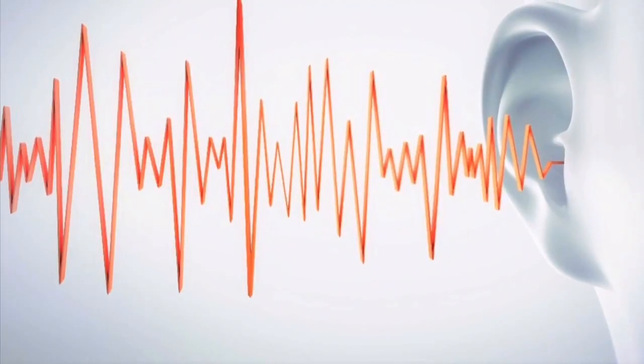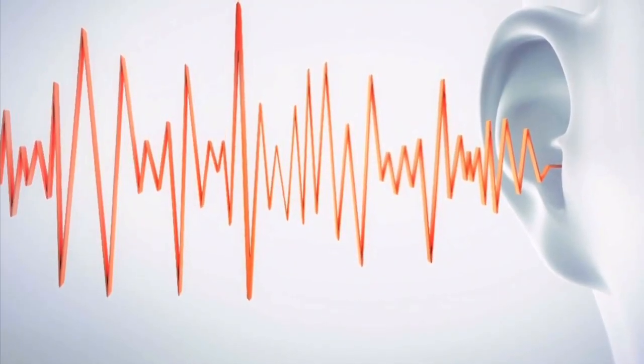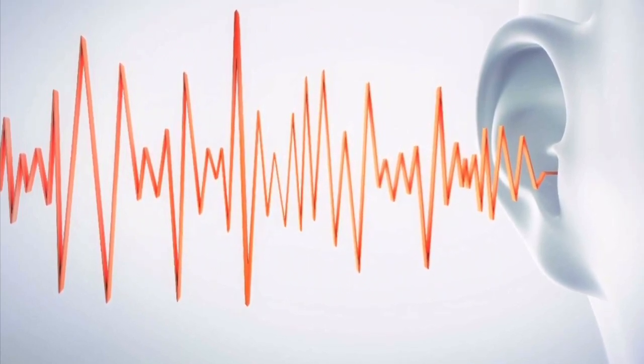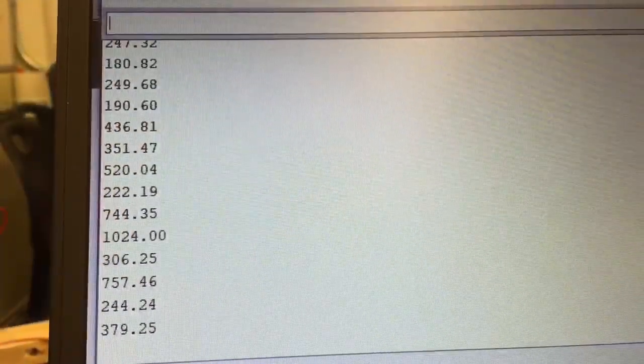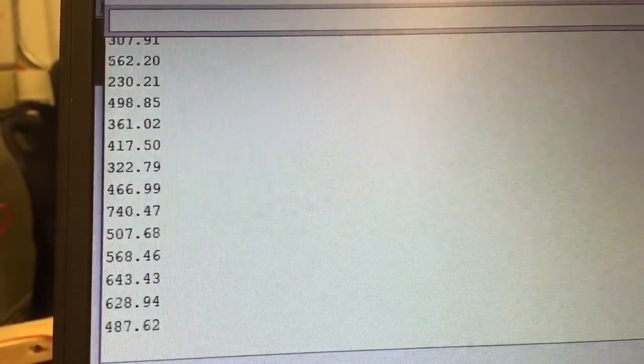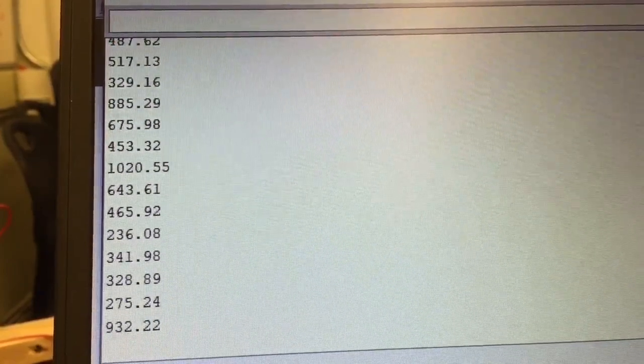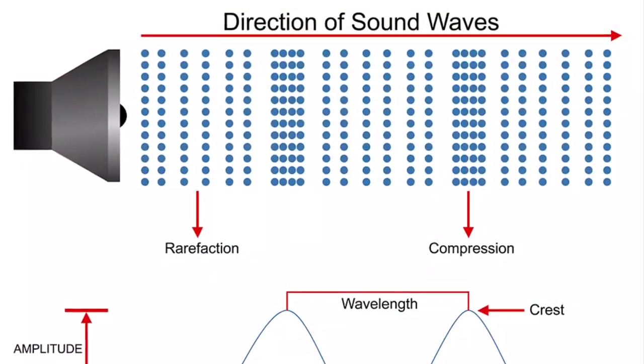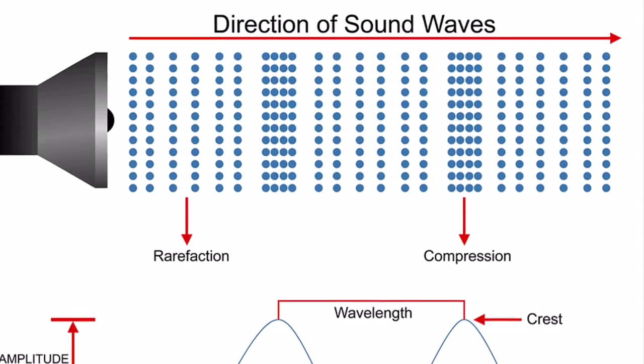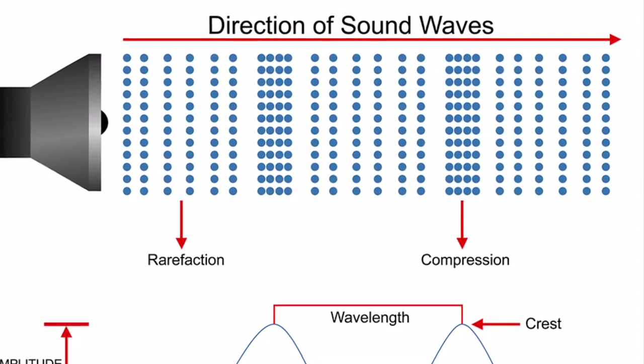We learned about how acoustics ties into our project, which is the science of all things sound-related, including the FFT program. The Fast Fourier Transform separates crazy-looking sound waves into a bunch of different, normal-looking sound waves, making the sound data much easier to read. Sound waves are pressure patterns in the air of high pressure and low pressure alternating. They are caused by vibrations of an object.